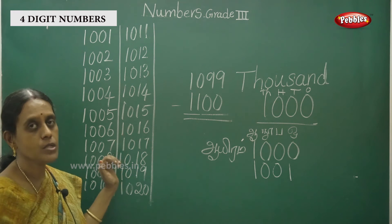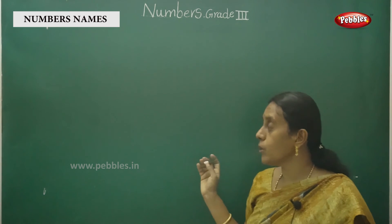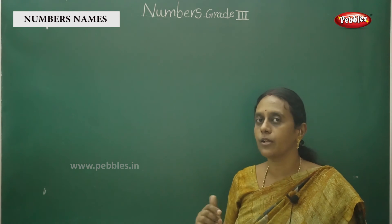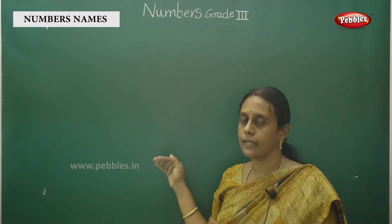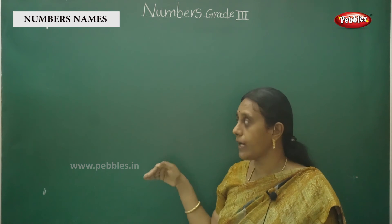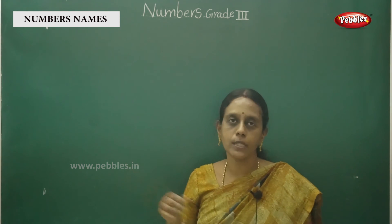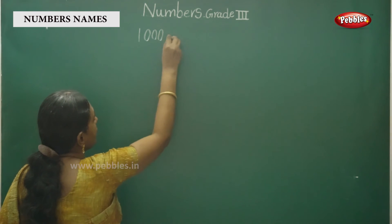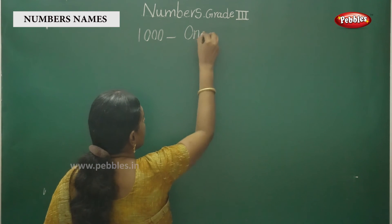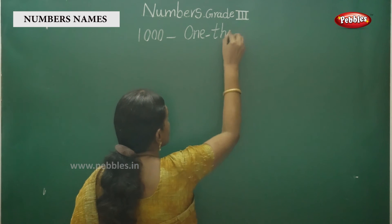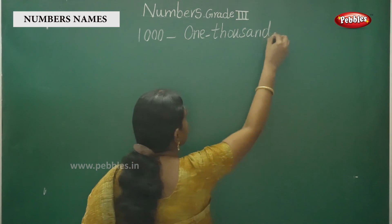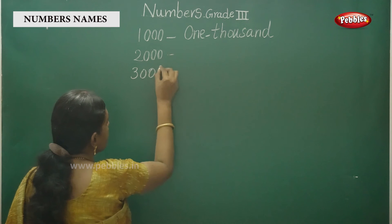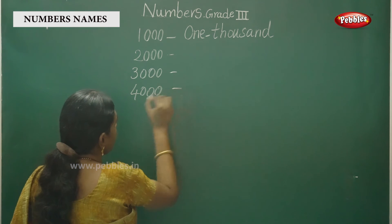You have to write legibly. Okay children, we have to follow the four-digit numbers. You have to write up to 9999 — you have to practice. We have completed only 1,100. First, this is 1,000 — put a small hyphen, and like this way you have to write all the number names.